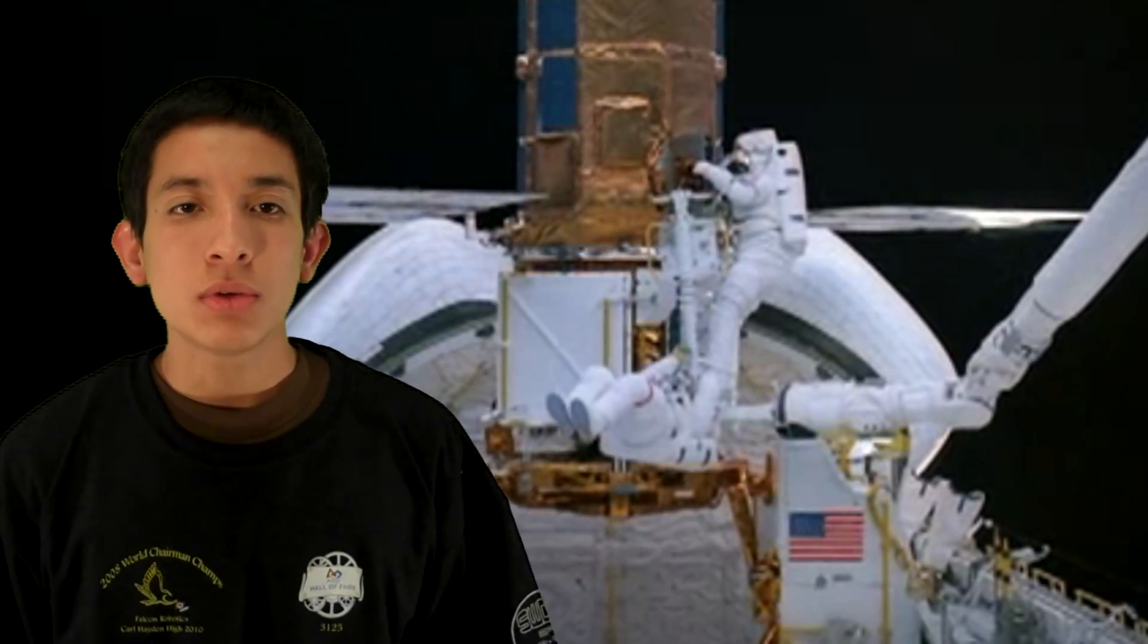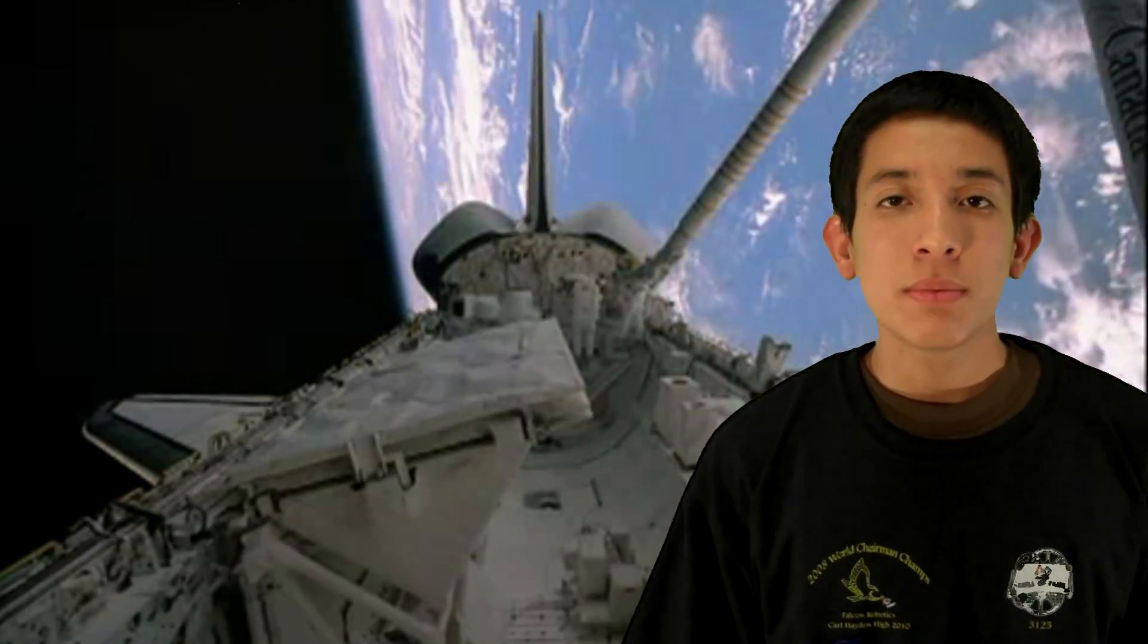If an astronaut does have to perform an EVA, then the EVROV can be used to do reconnaissance prior to the EVA to better prepare the astronaut for his mission. It can also be used to assist astronauts during missions by holding tools and providing another satellite. The EVROV can be used as a rescue device in the event that an astronaut becomes untethered and is floating off into space.